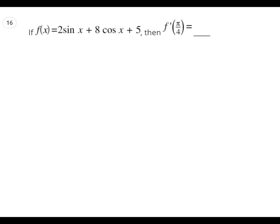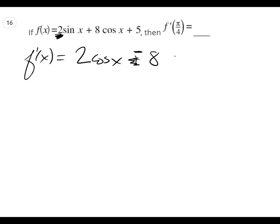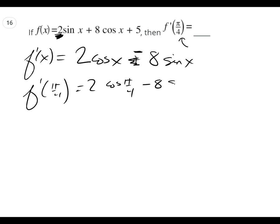You have your trig derivatives, log, and e to the x due by Thursday. So, s prime of x equals — what's the derivative of sine? That number hangs out in front, it's a coefficient. So, 2 cosine x. And 8 is going to hang out. What's the derivative of cosine? Negative sine x, with the derivative of... so we get 2 cosine x minus 8 sine x. Now, what do I need to do? Plug in pi over 4.